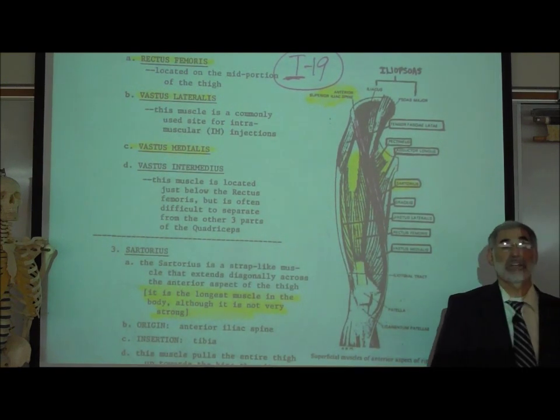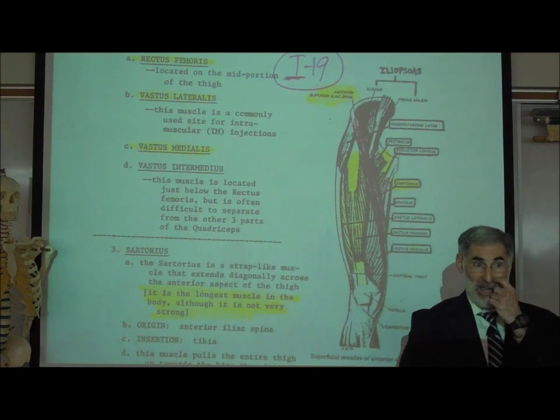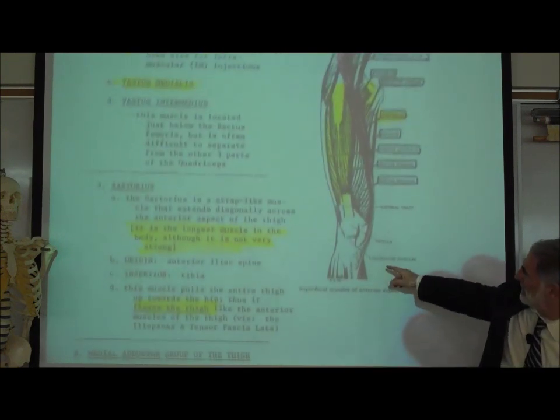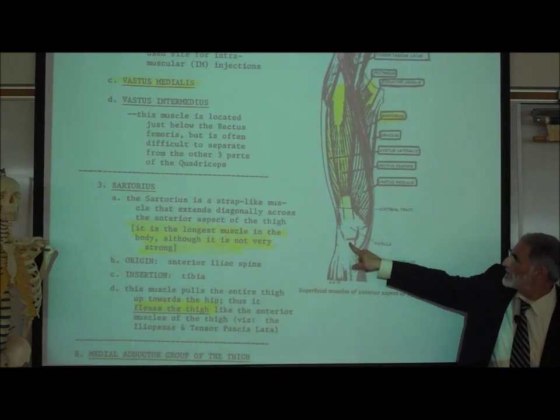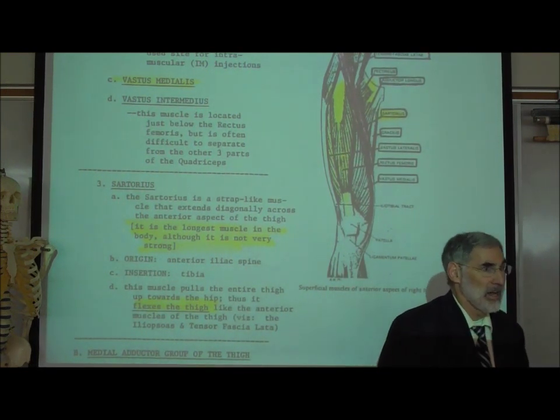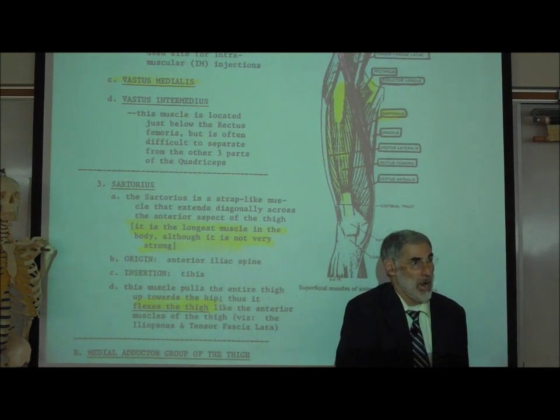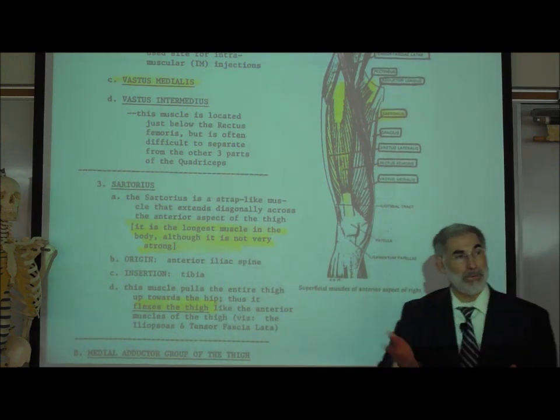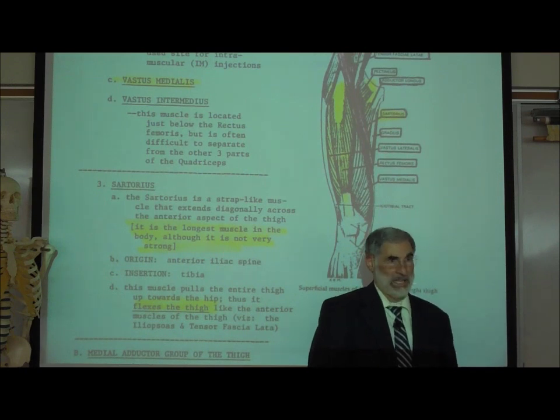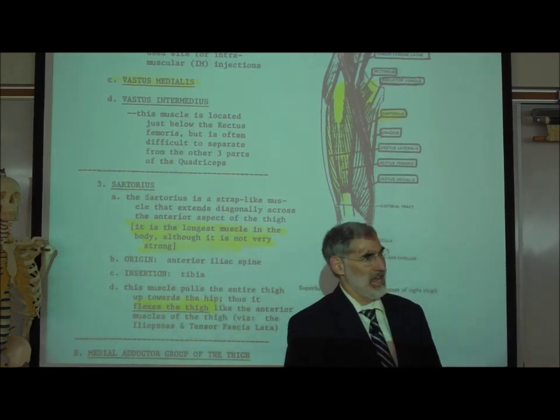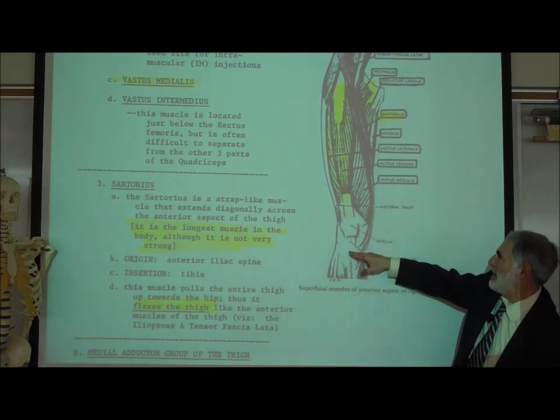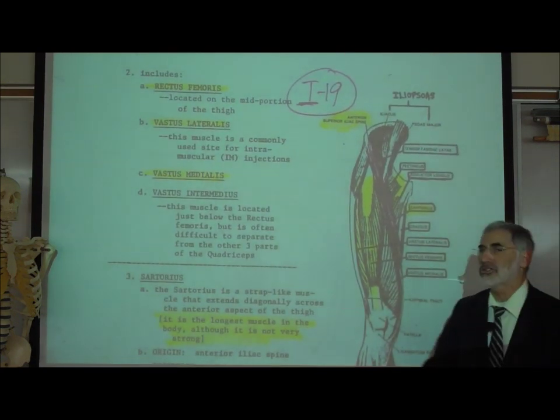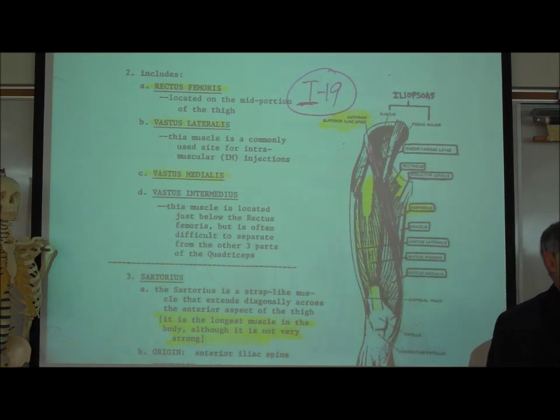It's called quadriceps because there are four tendons of origin. It inserts on the tibial tuberosity. Remember, that's the bump about an inch below the kneecap or patella. If you feel the tibial tuberosity, that bump below your kneecap, that's where this muscle attaches. You might remember when you tap somebody's knee to trigger the knee jerk, the patellar reflex, you actually tap right between the kneecap and the tibial tuberosity. Because the four parts of the quadriceps are each so large, they're each given their own name, and you have to know them.